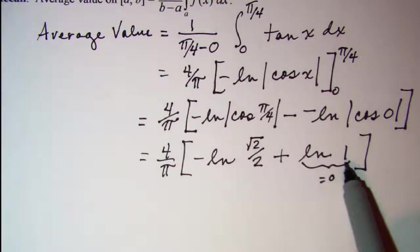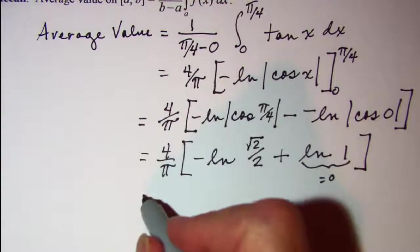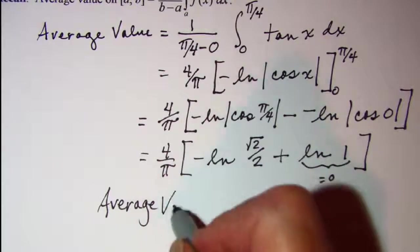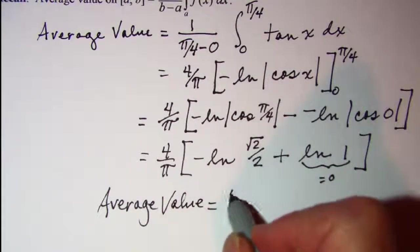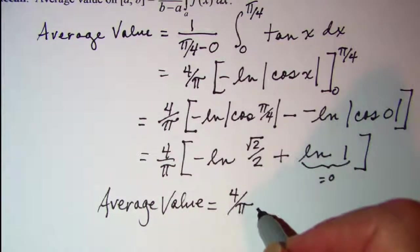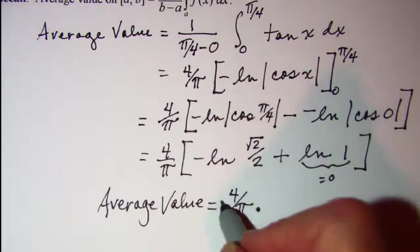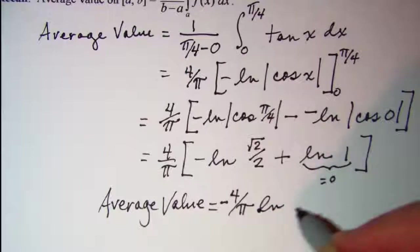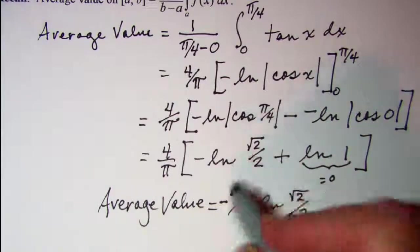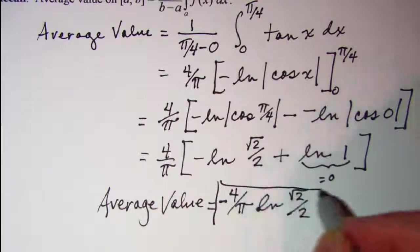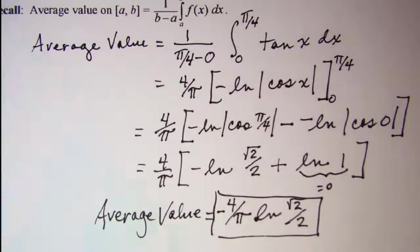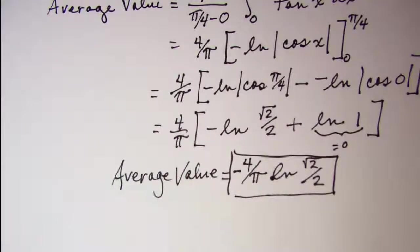So this term is 0, so basically I just have my average value is equal to 4 over pi times negative ln of root 2 over 2, and this negative, let's bring that out in front of the ln.